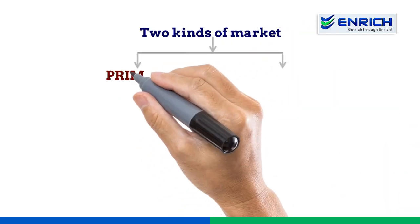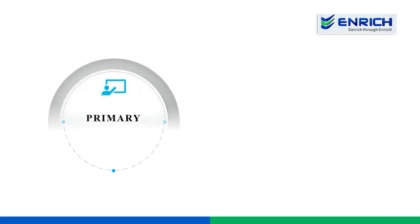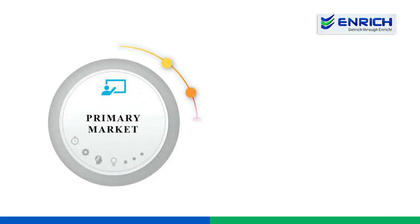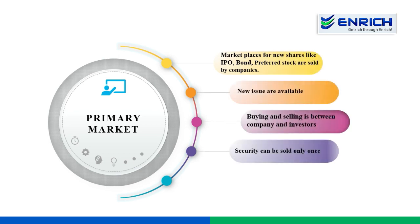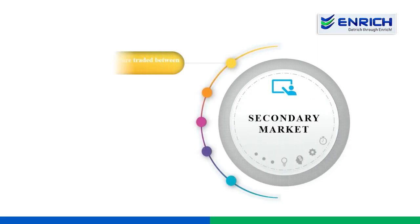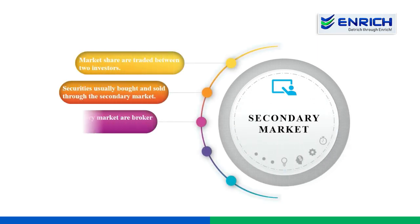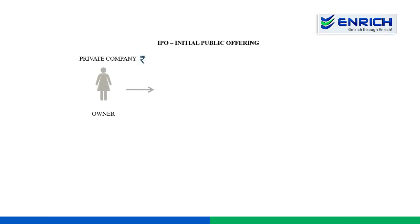Let's look at two kinds of markets: primary market and secondary market. Before a company is listed on the exchange, the transaction that occurs between the company and the investor is called the primary market. The secondary market is the next stage of buying and selling, which occurs after the initial transaction. Here, trading takes place between different investors, and stock brokers are the mediators in this process.